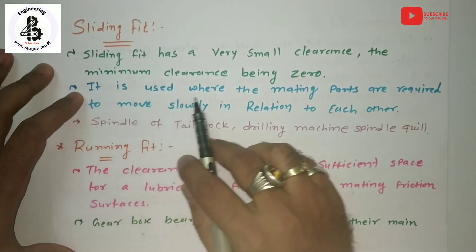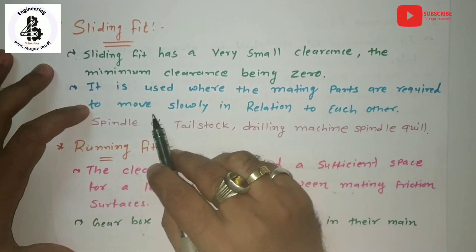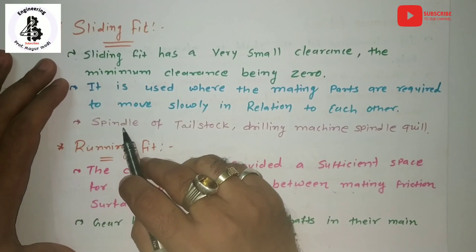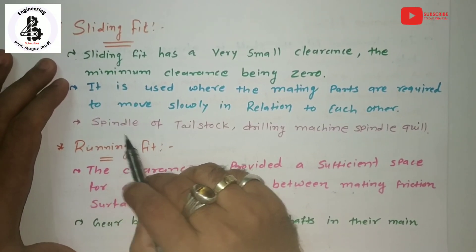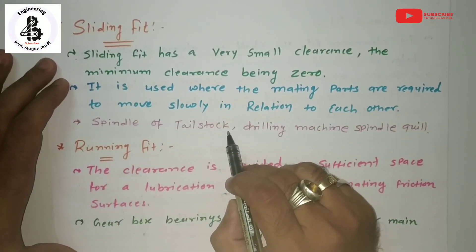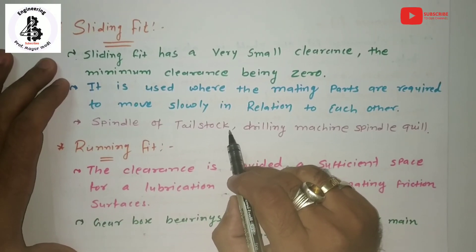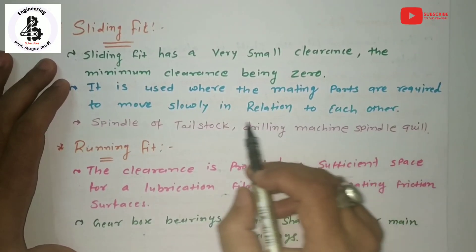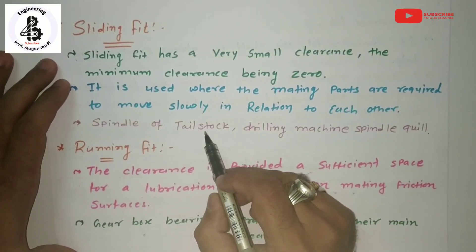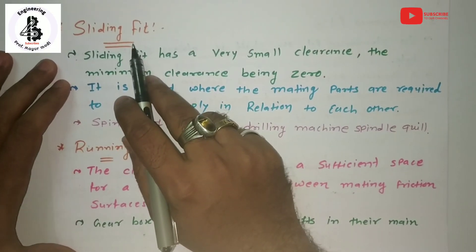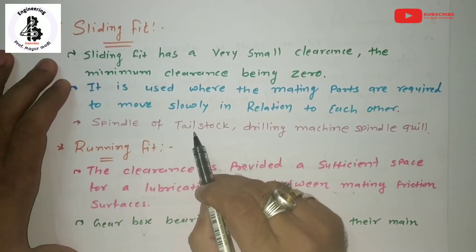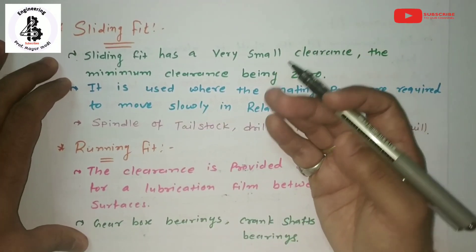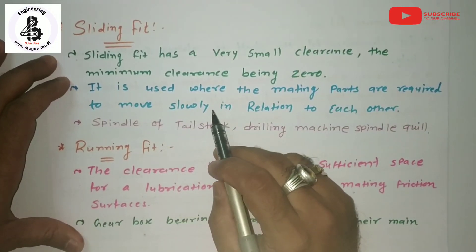Sliding fit is generally used where mating parts are required to move slowly in relation to each other. Applications include machine shaft spindles of the tailstock and the drilling machine spindle quill. These components are assembled together by the application of sliding fit — one component is easily fitted into another. These are examples of a sliding fit.